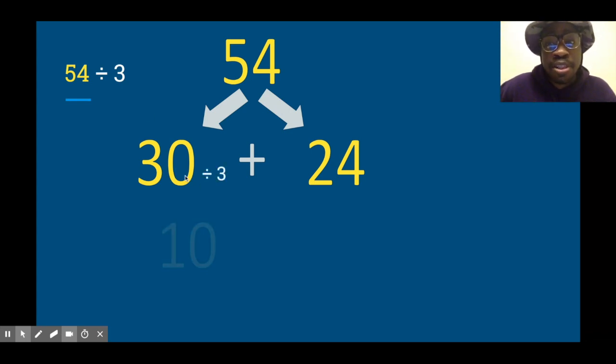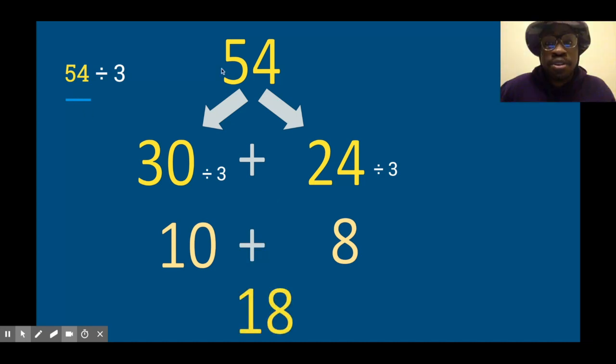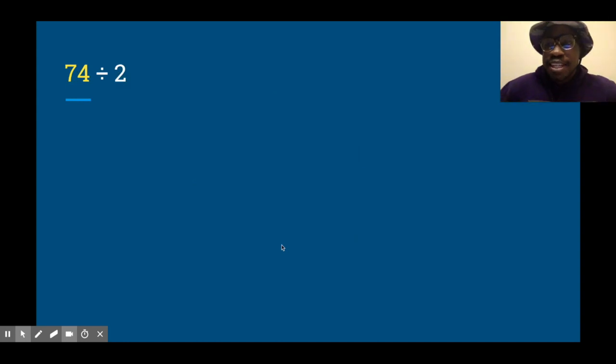I pulled the 30 out first because I want to divide by this—it's going to be 10. Alright, 30 divided by 3 is 10. Now I had 24 left over, which was perfect because 24 is also divisible by 3. I know that 3 times something is going to give me 24—that's 8. 24 divided by 3 is 8. So 10 and 8 together give me 18. 54 divided by 3 is 18. Oh, let's go!